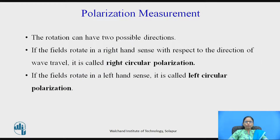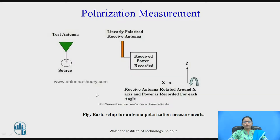How to measure the polarization of an antenna? The rotation can have two possible directions — if the field rotates in the right-hand, it is called right-hand polarization, and if the field rotates in the left-hand, it is left-hand polarization. Here is a simple arrangement: the test antenna is provided with a source or supply, while another linearly polarized antenna is used as a receiver, and the received power is recorded.